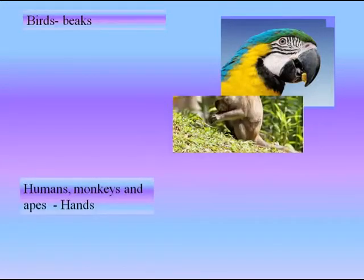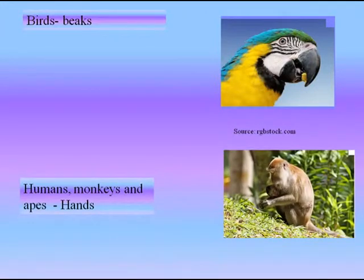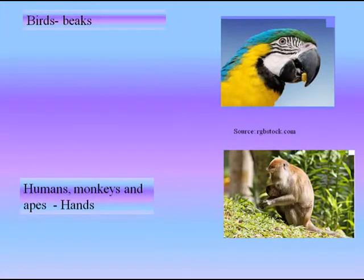Birds use beaks for intake of their food. For example, a parrot grabs a food particle between its beak. Humans, monkeys, and apes all use hands. It is clear from these examples that the process of food intake in different organisms is different.